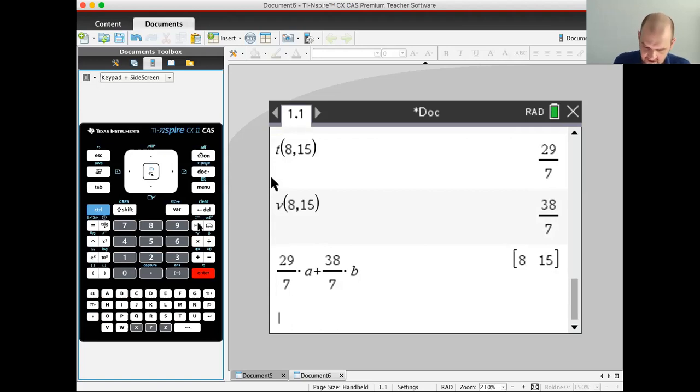Any other vector in the plane can be rewritten as a linear combination of them. Isn't that nuts? In the notes, we're supposed to do 815, so I'm going to do that also. T of 815, V of 815. So if I do 29 over 7 times A plus 38 over 7 times B, there you go. That's how you get there instead of using i and j, which would have just been 8i plus 15j. So it's interesting, though, right? I feel like this, if nothing else, helps you appreciate why i and j.